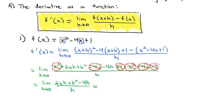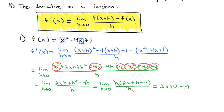We remove the discontinuity at h by factoring out an h. So we have the limit as h goes to 0 of h times 2x plus h minus 4, all over h. We divide out the h's, remove the discontinuity, and replace h with 0: 2x plus 0 minus 4, giving us f prime of x equals 2x minus 4 as the derivative of x squared minus 4x plus 1.